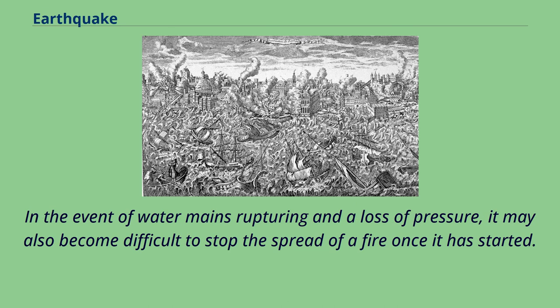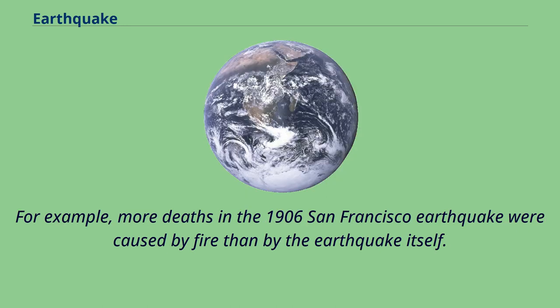Earthquakes can cause fires by damaging electrical power or gas lines. In the event of water mains rupturing and a loss of pressure, it may also become difficult to stop the spread of a fire once it has started. For example, more deaths in the 1906 San Francisco earthquake were caused by fire than by the earthquake itself.